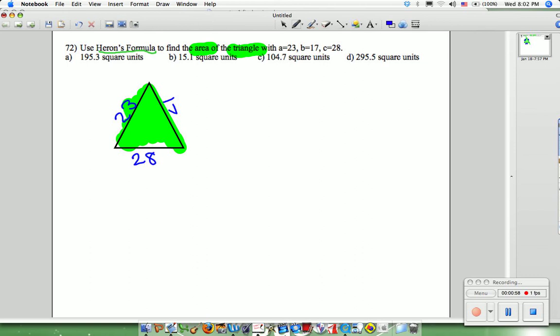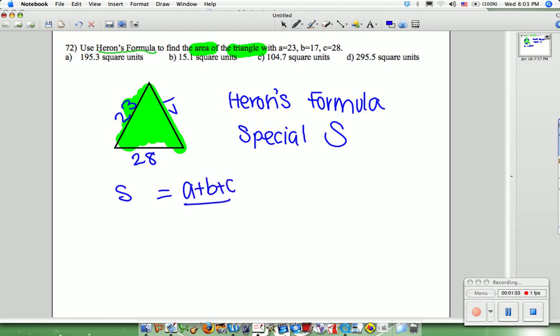For Heron's formula, we're going to need to find the special S. I remember it as SS. We take S is equal to - oops, wrote the wrong thing. The formula for special S: S equals A plus B plus C over 2.